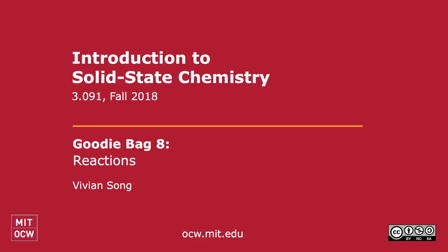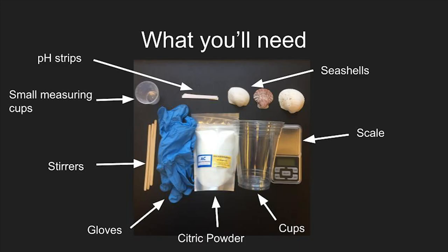In this video, I will be going over goodie bag number 8, which is about reactions and reaction rates. What you'll need are pH strips, small measuring cups, stirrers, gloves, citric powder, cups, a scale, and seashells.